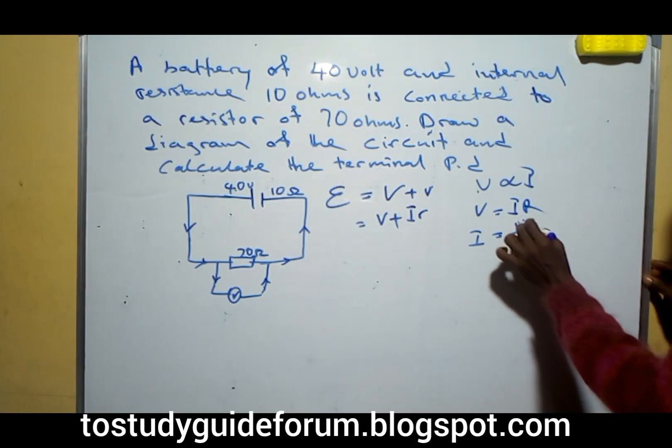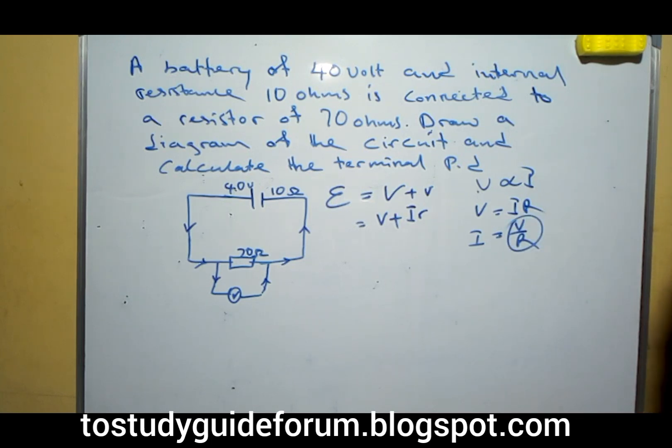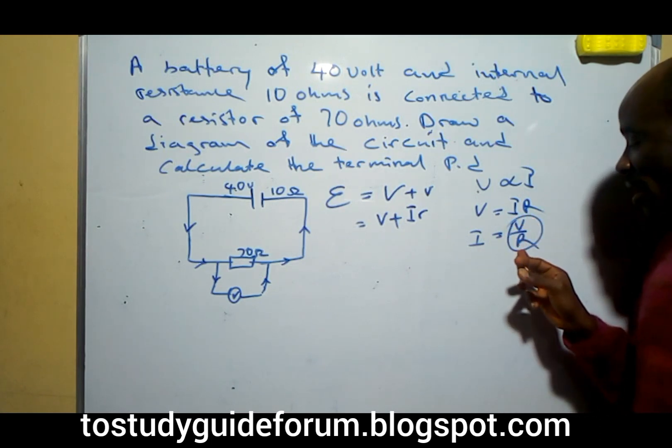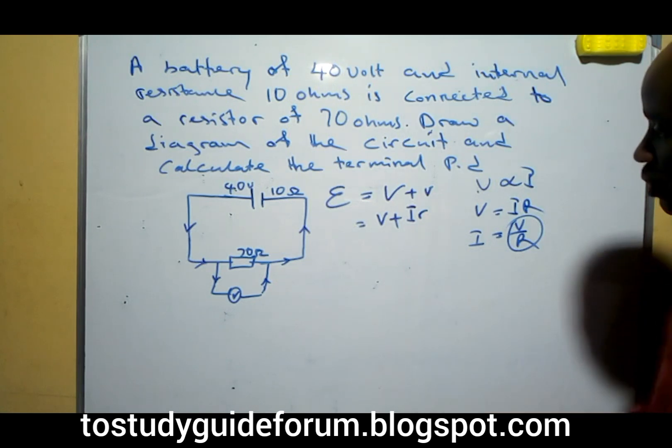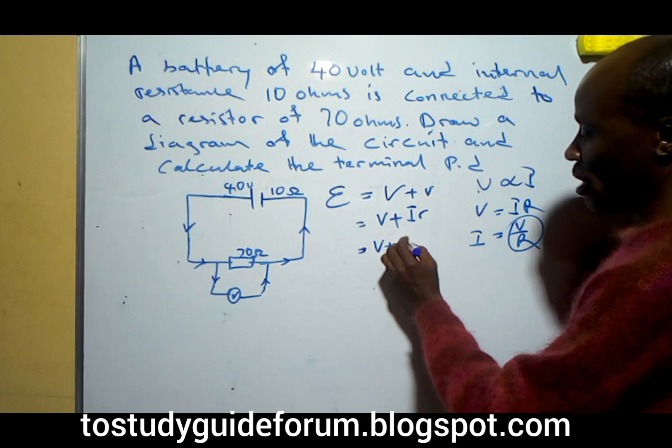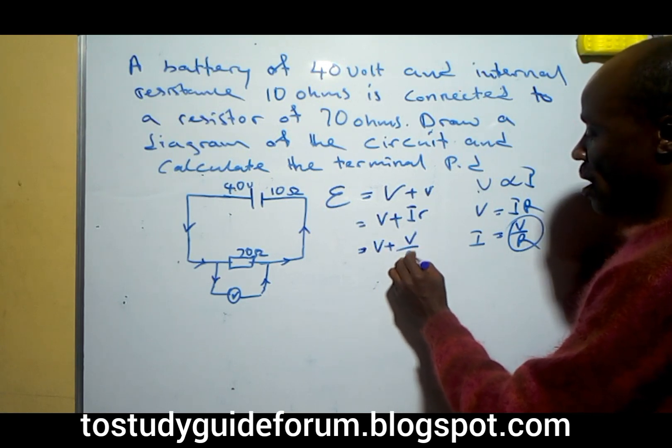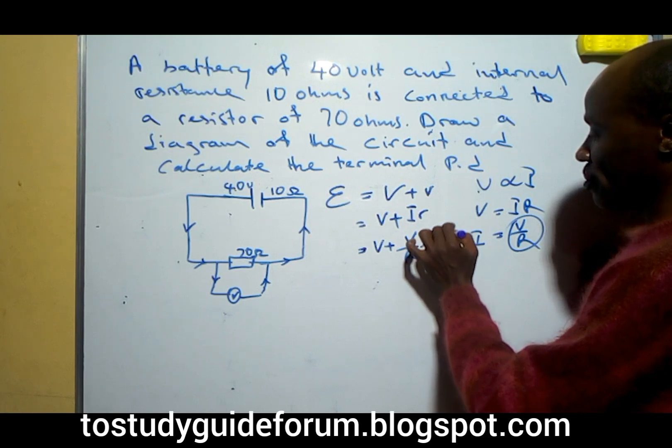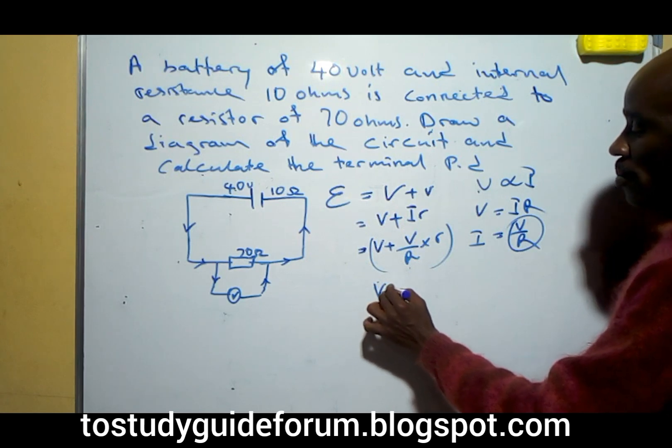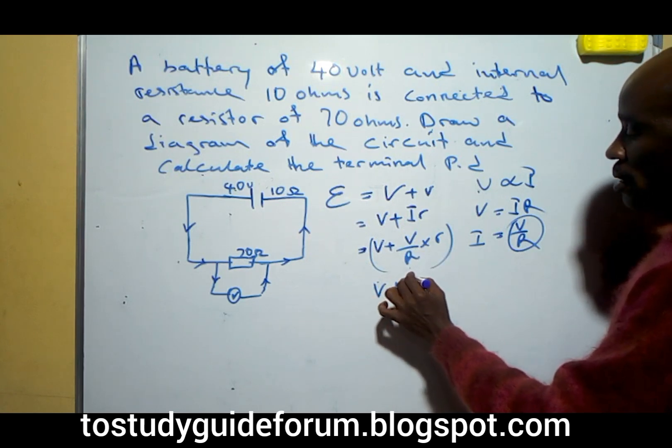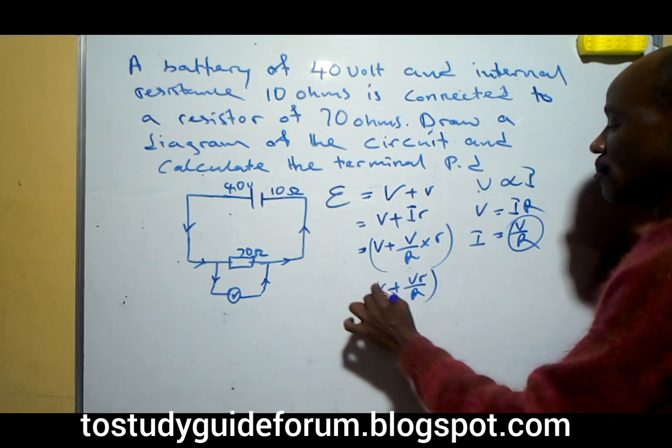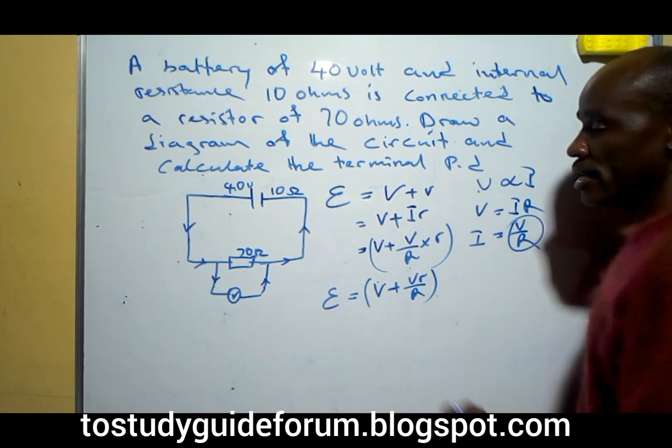Now, we can use this one, since we know that V over resistance will give us current. So we can also substitute. We can also add it there. Then we will have something that will look like this: V over R times small R, all in brackets. So in this case, what we have here again will be plus V small R over big R equal to the EMF.